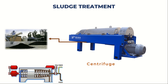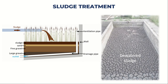Lastly, we have a simple yet effective method called the drying bed for sludge dewatering. The sludge is evenly spread over a porous bed or table, allowing the water to naturally drain out over time. As the sludge gradually dries, it forms a solid crust that can be easily removed and subjected to further processing or disposal.